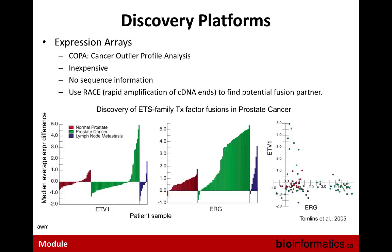Expression arrays have been used to hint at what's driving cancer. Some earlier studies from around 2005 would compare cancer to normal and identify genes that are expression outliers — those genes might be the ones really driving the phenotype. One method developed for this is COPA, cancer outlier profile analysis. The idea relates to standard normal distributions and Z-scores — you standardize expression values and look for samples with very high Z-scores that are significant outliers.